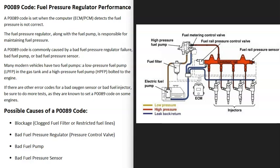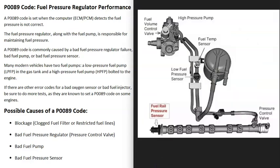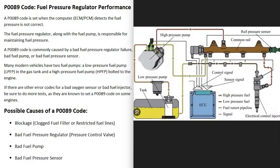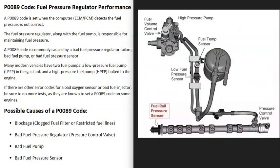One thing to note is that there can be different types of fuel pressure systems. Older vehicles only had one fuel pump, but many modern vehicles have what's called a GDI engine, where you have two fuel pumps — a low-pressure fuel pump inside the gas tank and a high-pressure fuel pump up at the engine. Because systems can vary, the first thing to do is get a diagram for your specific vehicle to know where all the sensors are located and what's going on with the fuel pump or pumps.